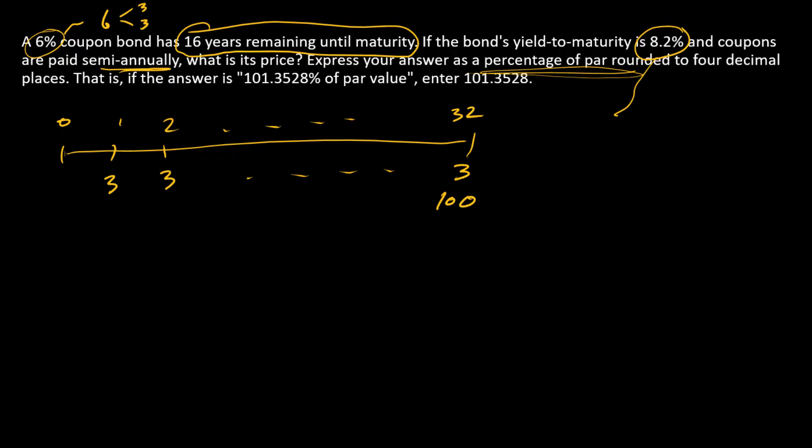So the yield to maturity is 8.2% annualized. And so the semi-annual R is 4.1%. Let's go straight to a financial calculator.